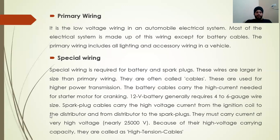Next is primary wiring and special wiring. Primary wiring has low voltage requirements and is used for headlight, tail light, indicator light, and instrument panel. Special wiring is used where there is a high voltage requirement — for initial starting, where the current requirement is high, we use special wiring.